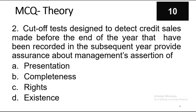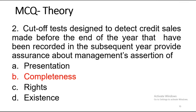Question two: a cutoff test designed to detect credit sales made before the end of the year that have been recorded in the subsequent year provides assurance about management's assertion of: A) presentation, B) completeness, C) rights, or D) existence. The answer is also completeness — because you are talking about correct recording in the proper accounting period, which relates to completeness assertion.